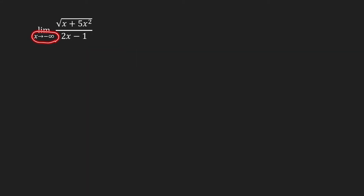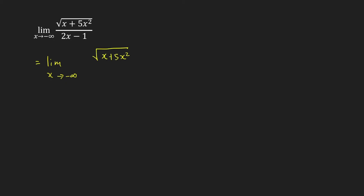Now let's find the limit as x approaches negative infinity. Do you think this is the same thing as the limit as x goes to infinity? So let's compute for this limit. This limit is still in the form infinity over infinity, and we're going to use the same procedure as in the previous limit. We're going to divide the numerator and denominator by the highest power of x in the denominator, which is x. So you have x plus 5x squared over x, and then over 2x minus 1 over x.